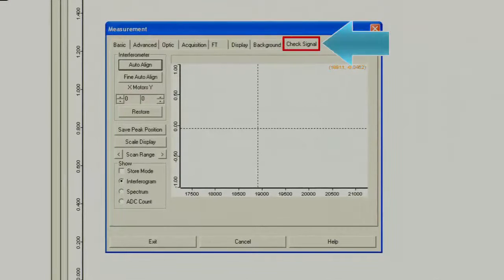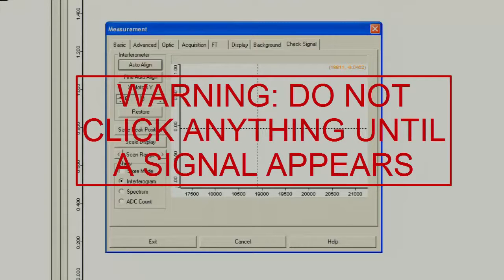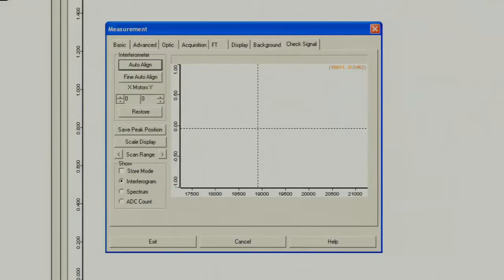Next you want to check the signal, so click check signal. Once you are on the check signal tab, do not touch, click, or press anything until the signal shows up. If you do, the software will likely crash. It may take a little while for the signal to appear, but be patient.